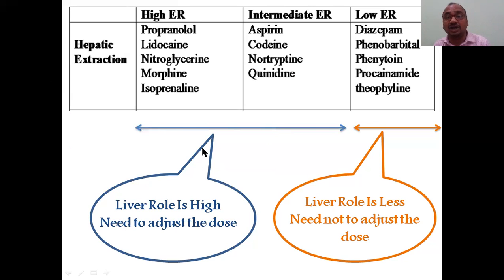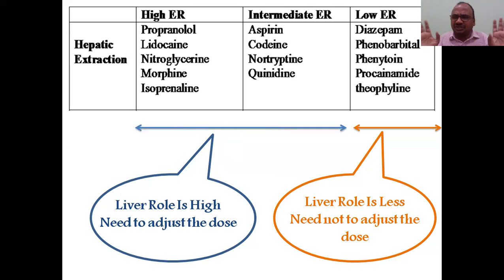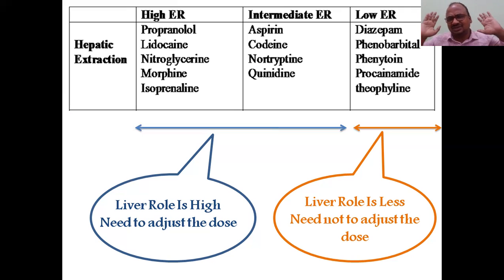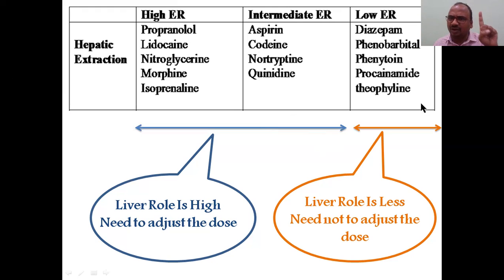Dosage adjustment is only required for high and moderate hepatic extraction ratio drugs, because the liver's role is main here. When the liver itself is damaged, you need to adjust the dose. If the drug belongs to low extraction ratio, the dose need not be changed, because liver's role is very less. You can also Google any given drug to find its extraction ratio classification.